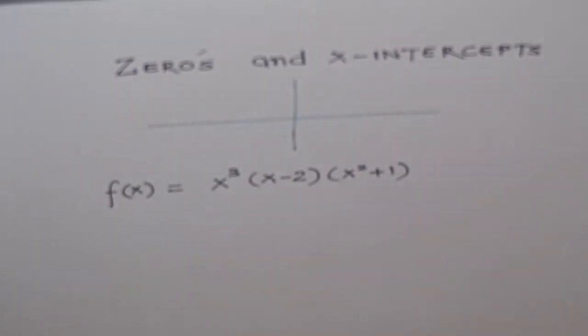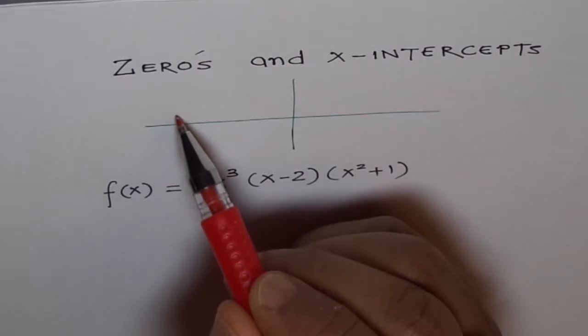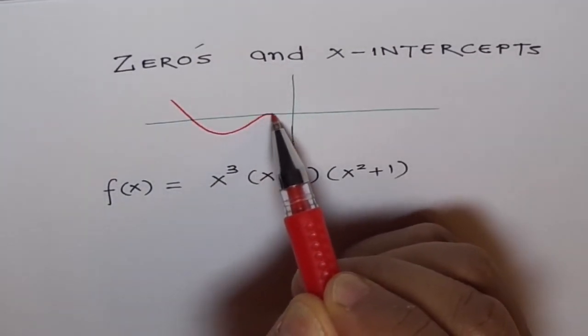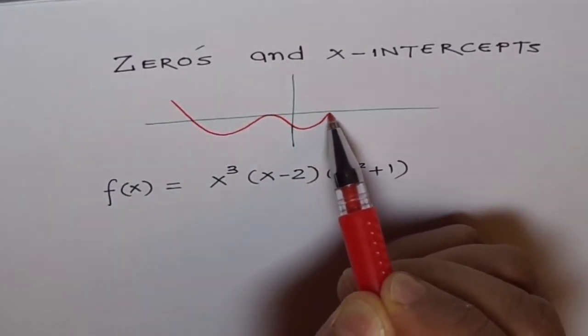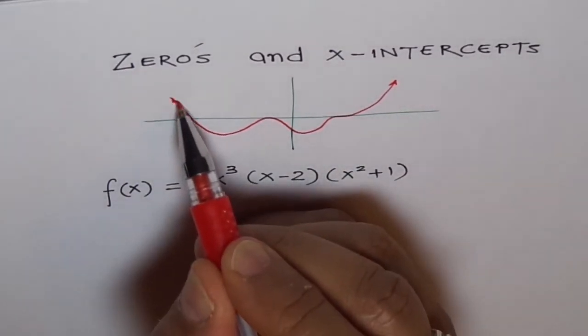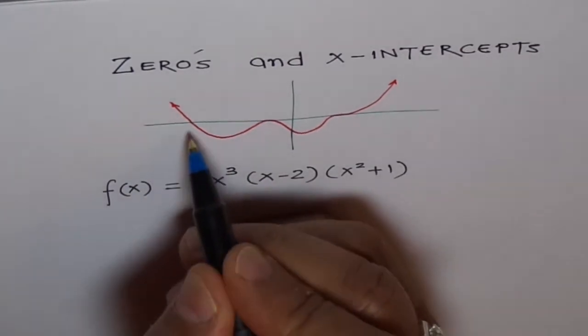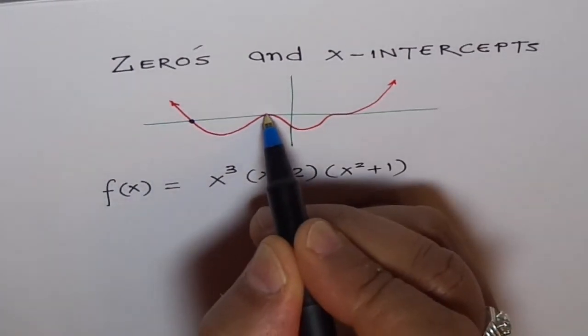Let's say this is our coordinate system and let me draw a function here. This is our function. It looks like an even degree function with positive leading coefficient. Now here these are our zeros.